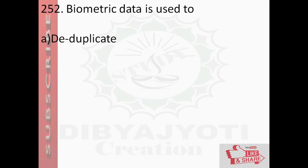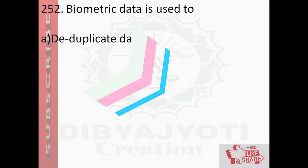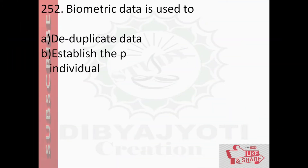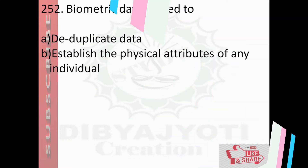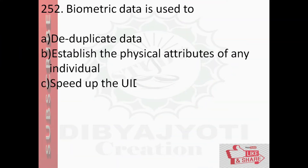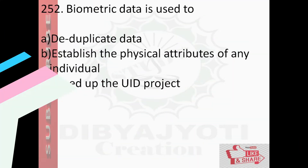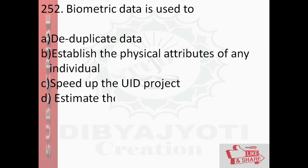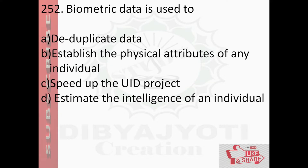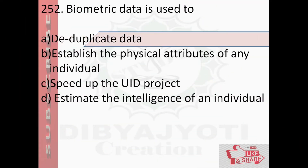Question number 152: Biometric data is used to — option A: deduplicate data, option B: establish the physical attribute of any individual, option C: speed of the UID project, option D: estimate the intelligence of an individual. And the answer is option A: deduplicate data.